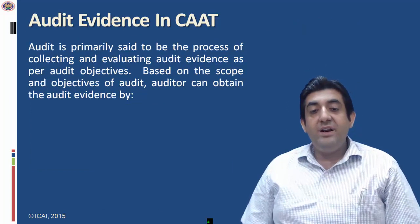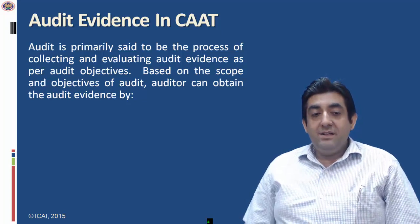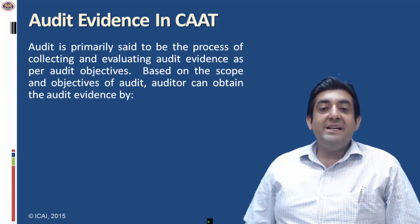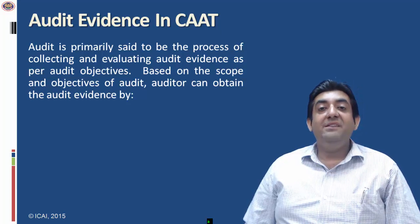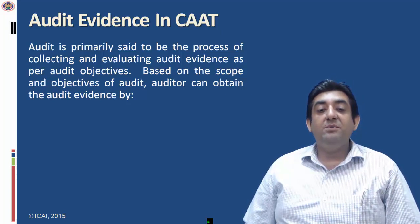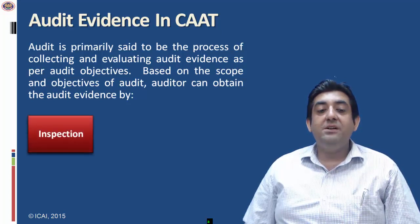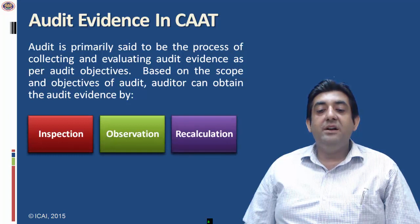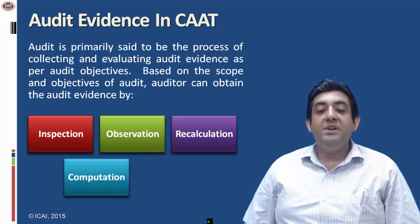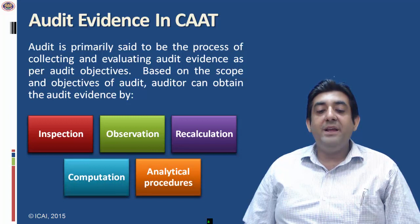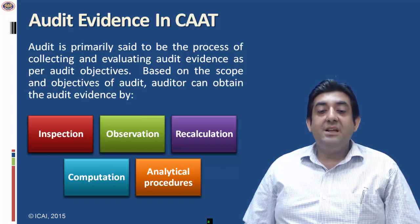Next is audit evidence in CAAT. Audit is primarily said to be the process of collecting and evaluating audit evidence as per the audit objective. Based on the scope and objectives of the audit, the auditor can obtain audit evidence by inspection, observation, recalculation, computations, and by applying some analytical procedures.